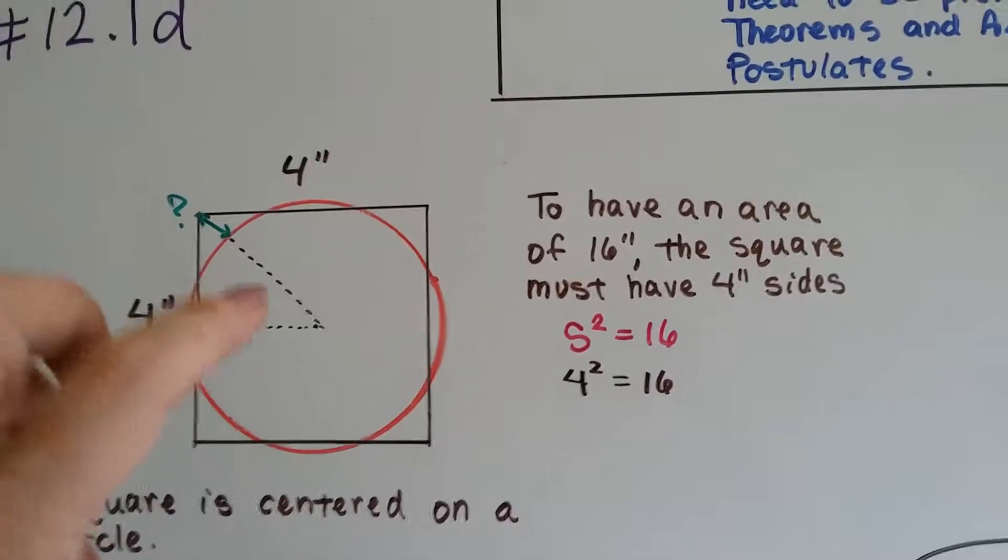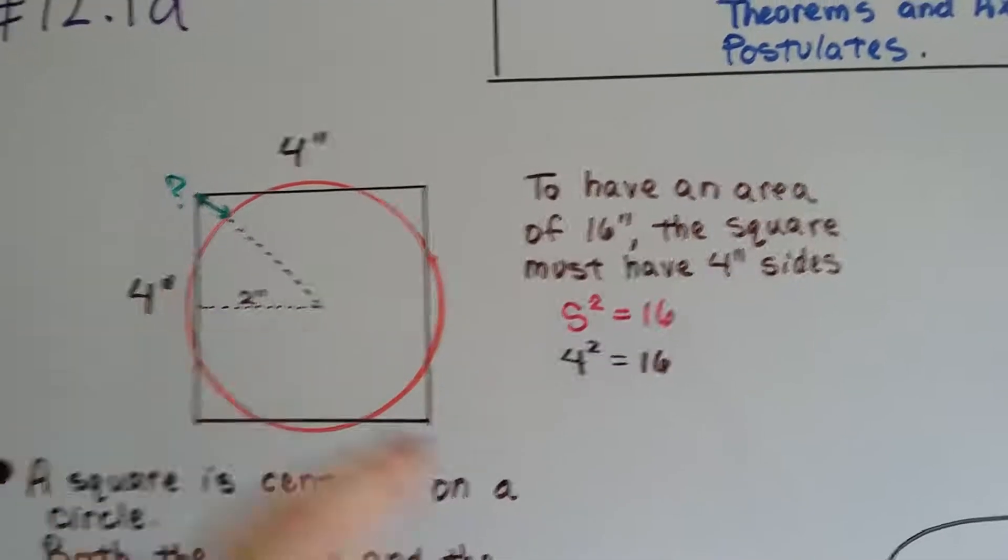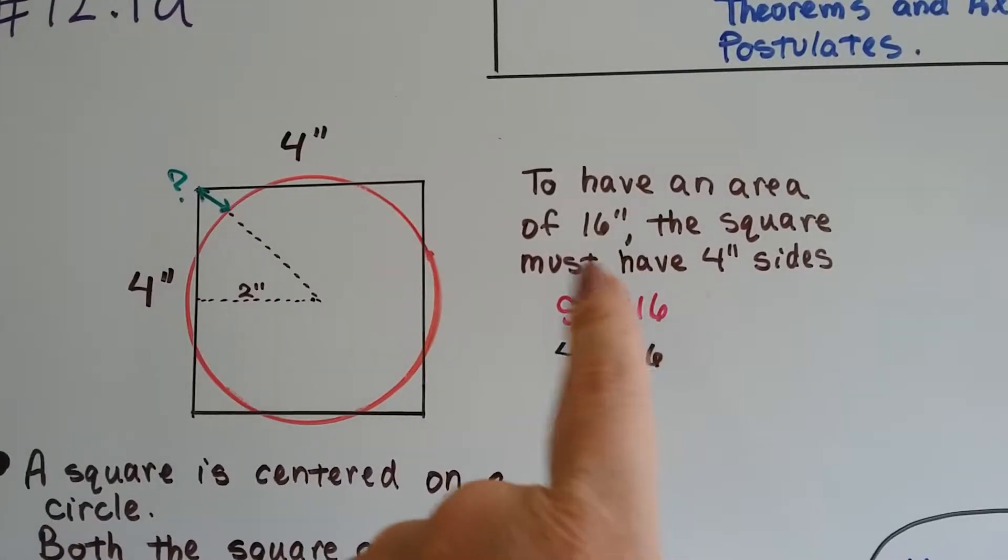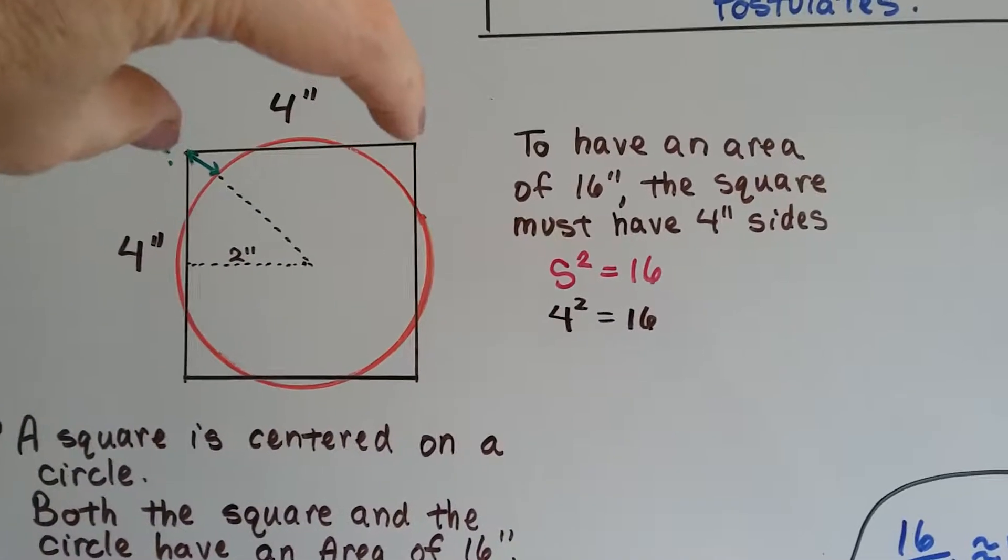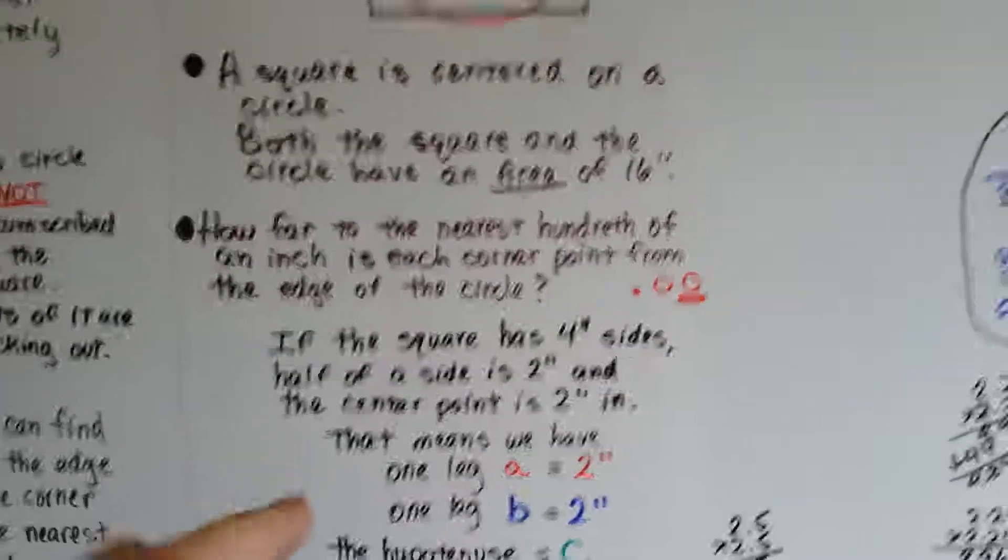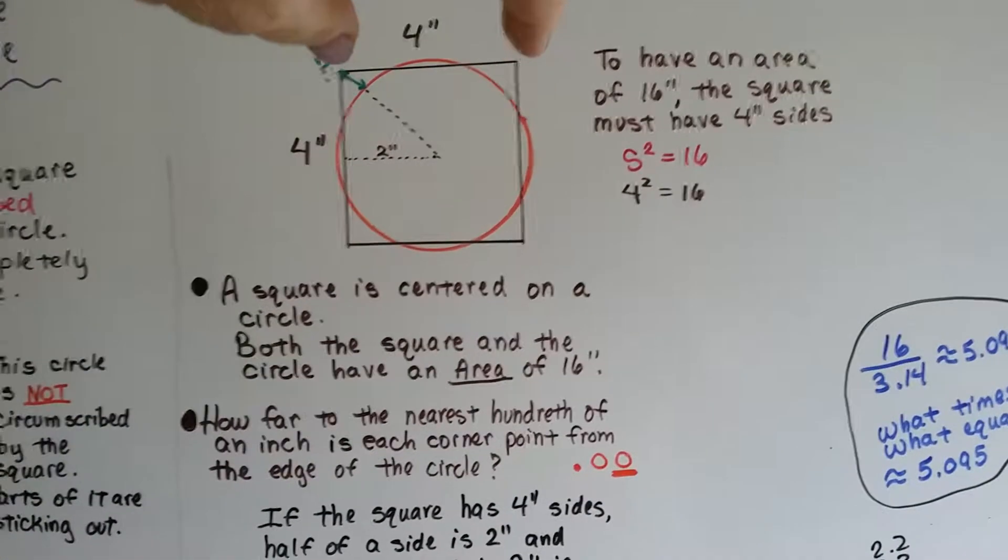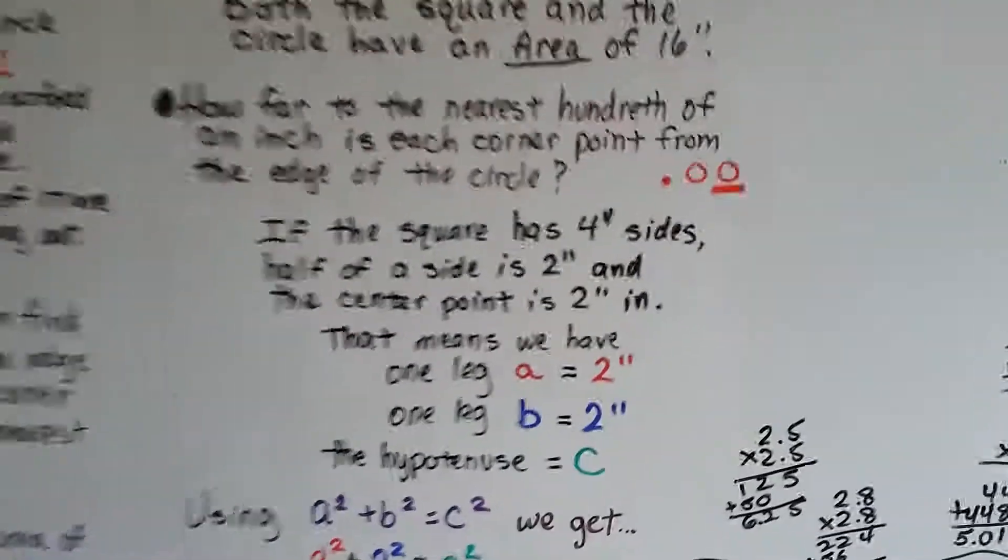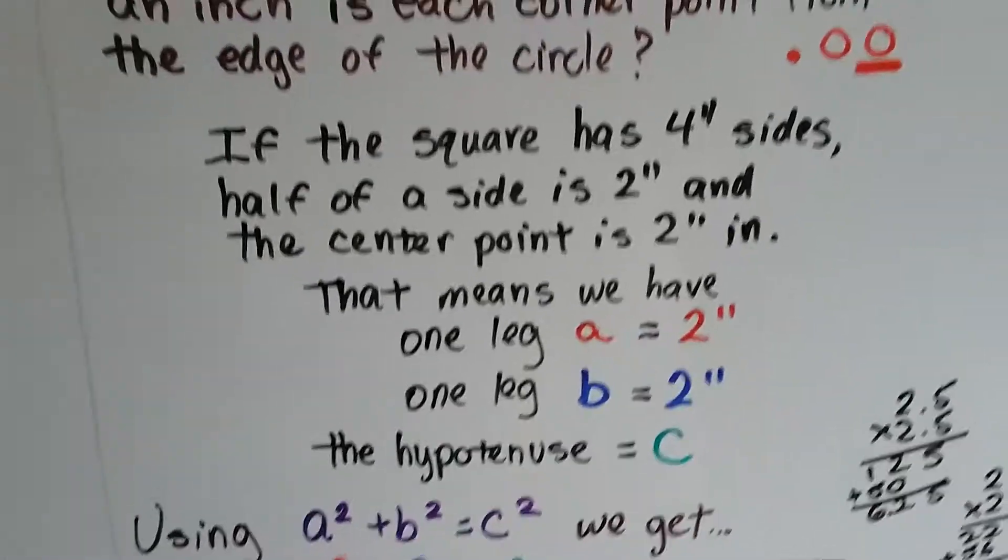So to have an area of 16 inches, that square must have a side of four and four. Because the s squared is the area. So for s squared to be 16, it must be four times four. So that side's four inches and that side's four inches. Well, guess what? If the square has four inch sides, half of a side is two inches. Two inches, two inches. And if this side's two inches, that means the center comes out at two inches.